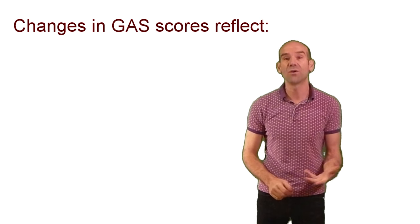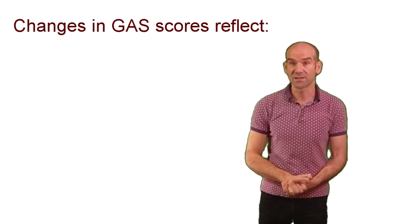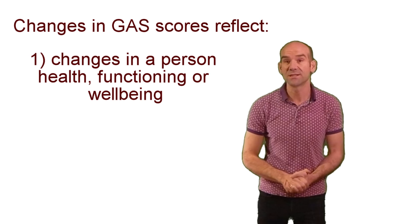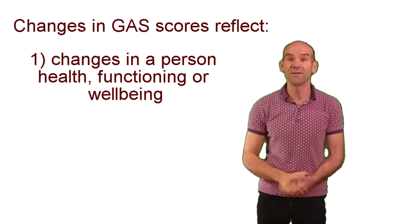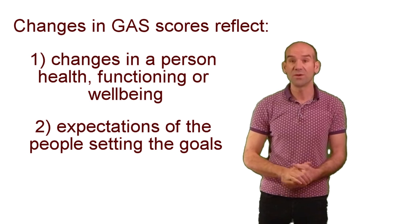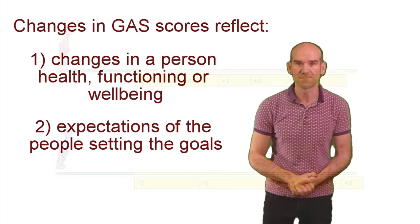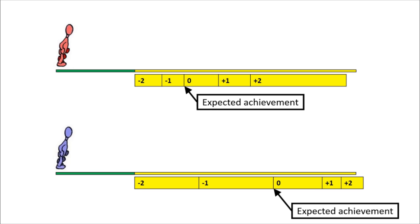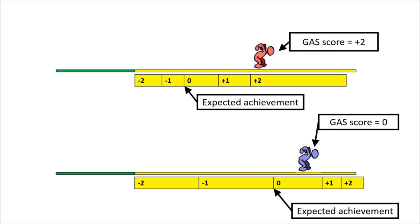My main problem with goal attainment scaling is more fundamental, however, and relates to what constructs GAS scores actually measure. Changes in scores in a measure of goal achievement reflect two things. Firstly, changes in a person's health, functioning or well-being from a baseline state. And secondly, the expectations of the person or people who set the goals. In fact, it is possible for one person to do worse in terms of their rehabilitation outcomes, but score better than another person if the expectations for the first person were initially lower.